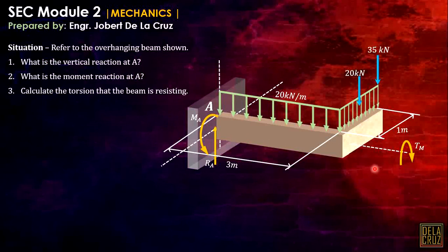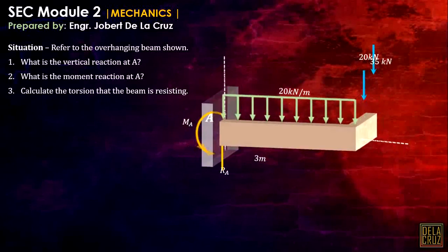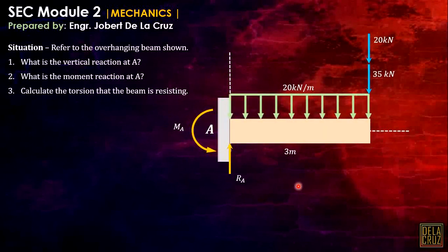Calculating the vertical reaction at A: this uniformly distributed load of 20 kN/m over 1 meter gives a resultant of 20 kilonewtons. That resultant of 20 kN acts at 1 meter. Looking at this in this plane, we can calculate RA and also the moment at A.